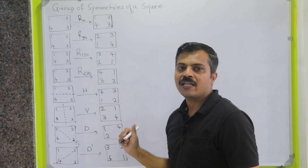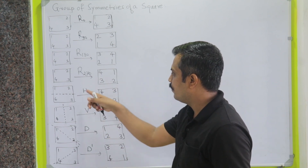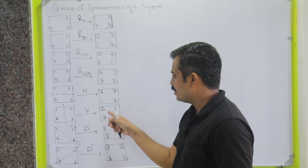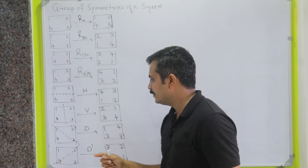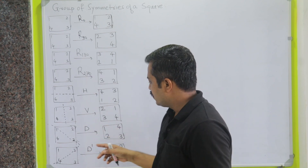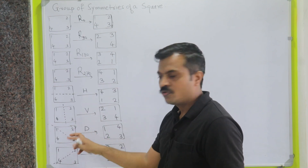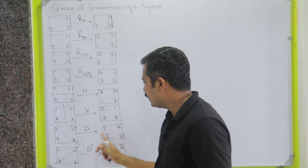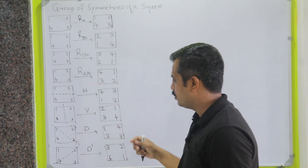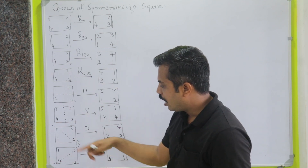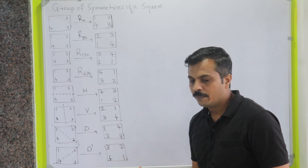You might also get a symmetry by flipping the square along the horizontal axis — denoted H. Similarly, flipping along the vertical axis gives symmetry V. At last, we have diagonal flips: flipping diagonally keeps 1 and 3 fixed while 2 and 4 swap positions; flipping along the other diagonal keeps 2 and 4 fixed while 1 and 3 interchange.